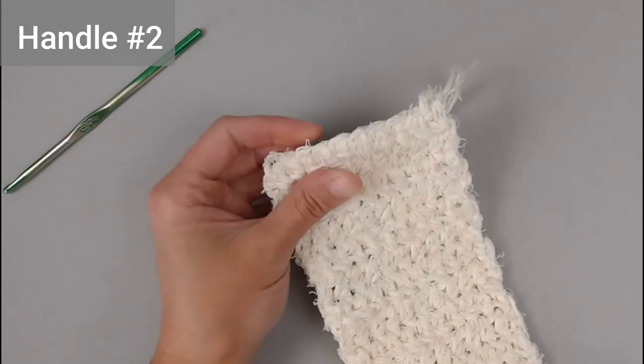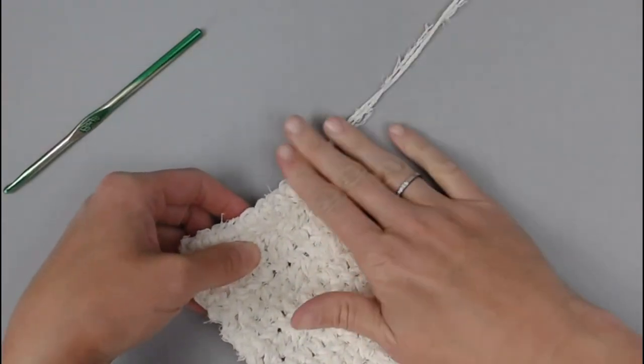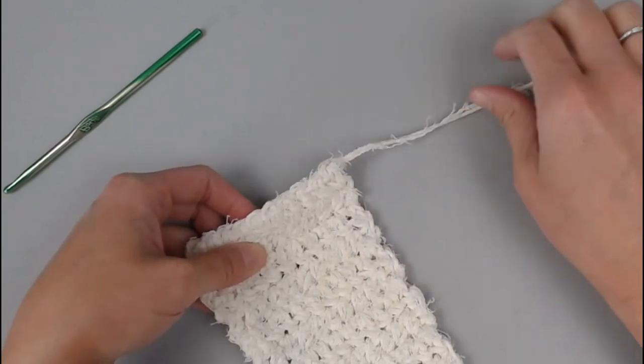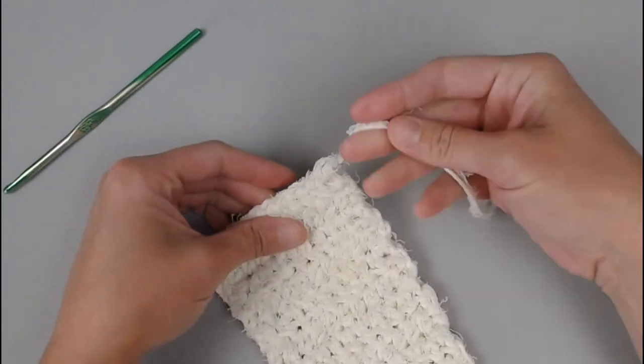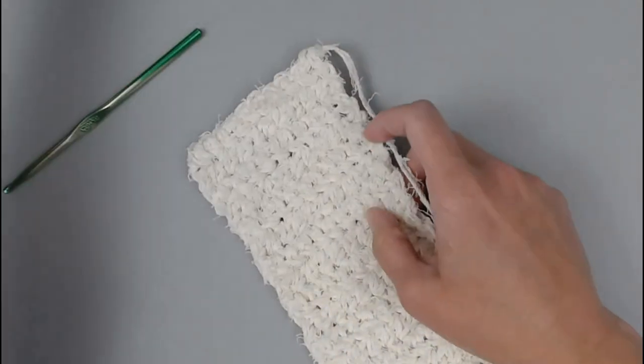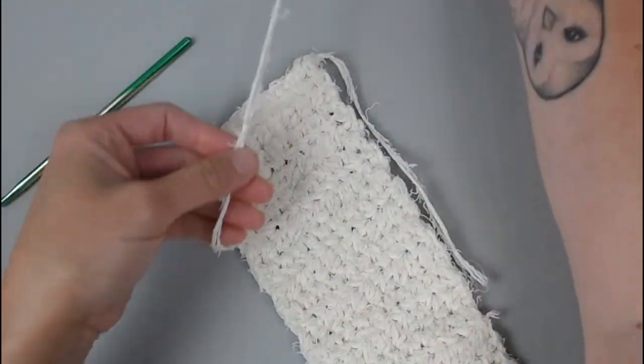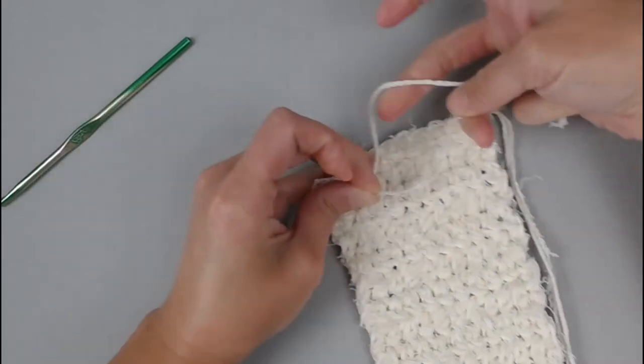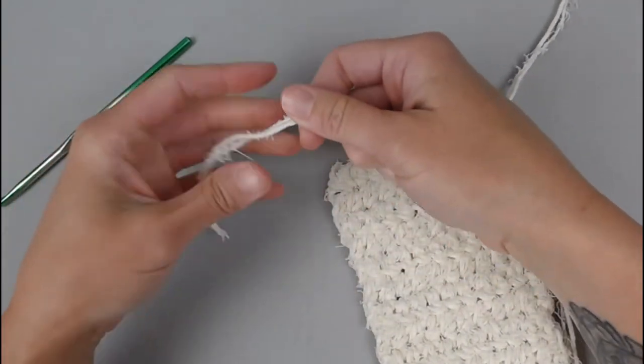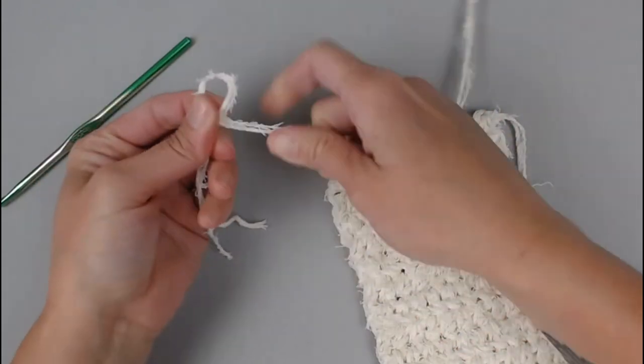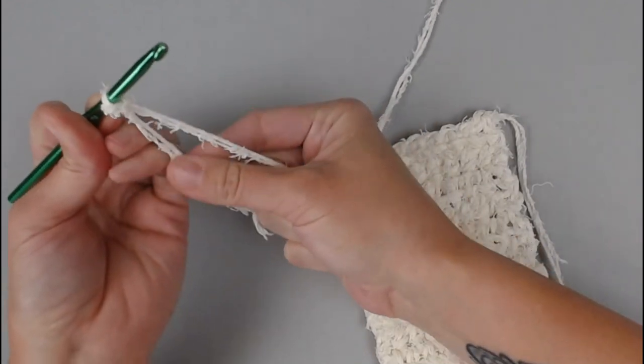Handle number two has the side where our beginning tail is. We're going to leave the beginning tail alone. I'm going to keep it out of the work. I'm not going to crochet it in. I'm going to wait to the end of the project and just weave that in. So grab your two strands. Begin with a long enough tail for us to weave in our ends. Create your slip knot, attach your crochet hook.